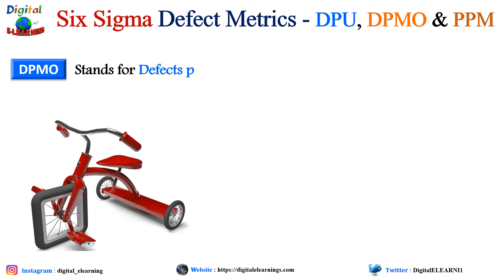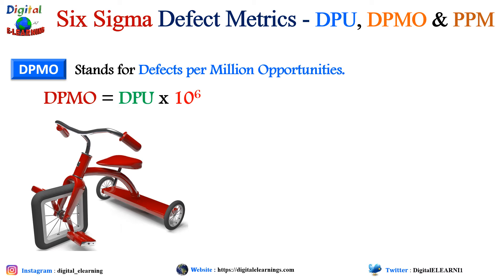DPMO stands for defects per million opportunities. It describes the average defect opportunities for defects in each unit produced. Opportunities represent everything that goes into making a product, and each opportunity has the potential of having a defect. We calculate DPMO by multiplying the DPU by 10 to the power of 6. This formula calculates the probability that a given process will produce x number of defect opportunities per million units produced, and it differs from the calculation of PPM.